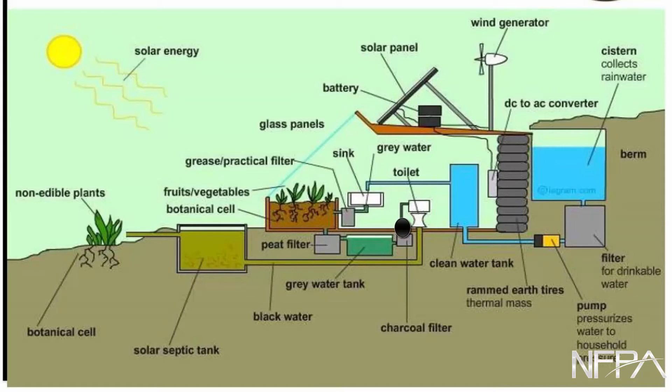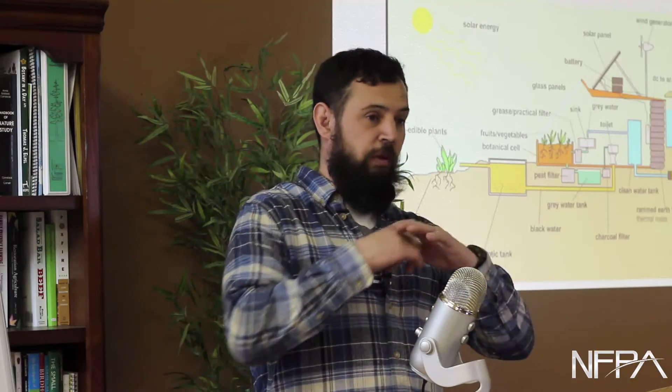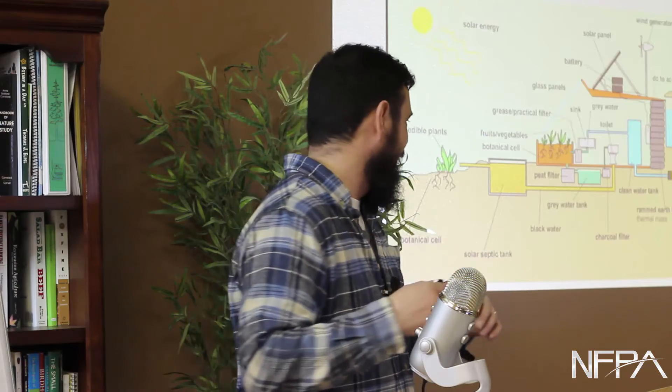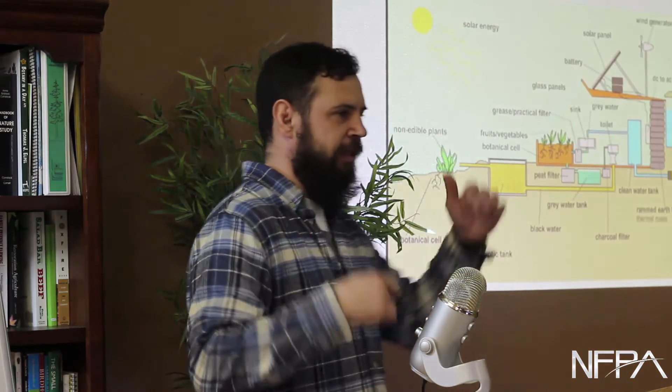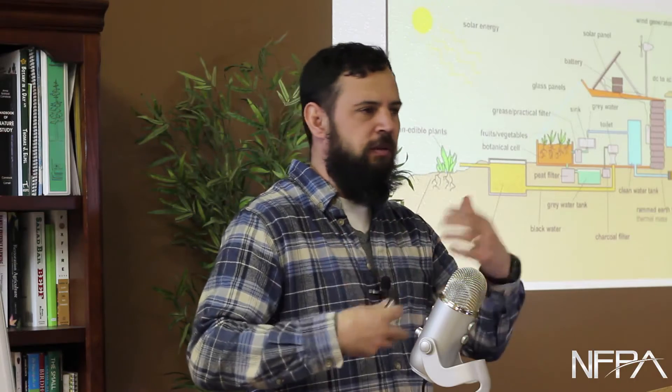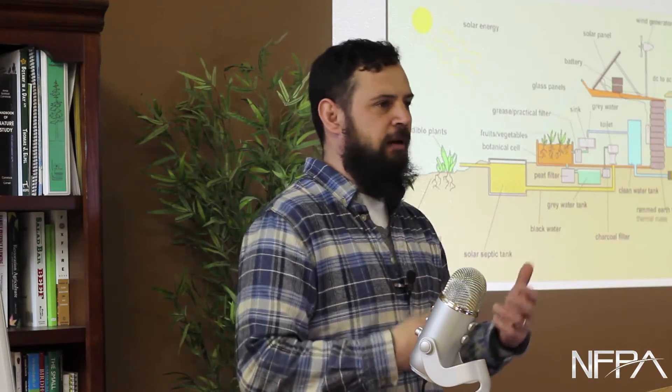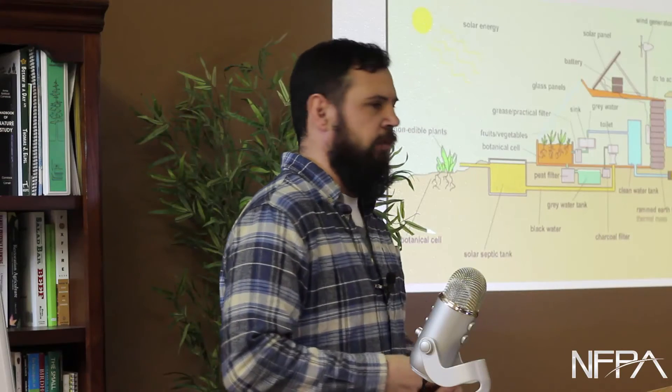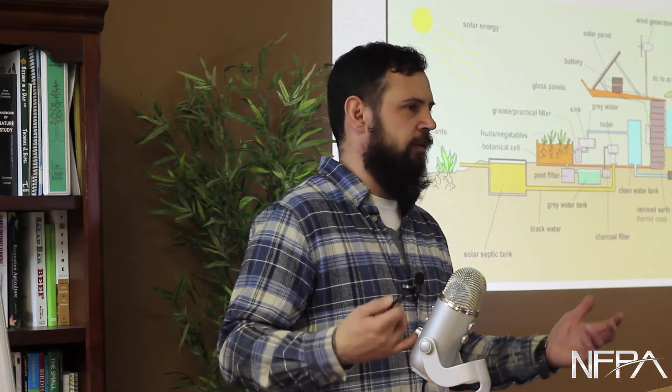From that greywater tank, that is used to supply it to the toilets. Once it's used there, it obviously becomes black water and it goes to what they call a solar septic tank, which is really a traditional septic tank with glazing. So it literally is almost like a greenhouse over a septic tank. And then what that does is that extra heat and light gets in there, the microbes start working faster and it breaks it down faster. So from there it goes to an outdoor botanical cell and it's used to feed or to water ornamentals or non-edible type plants.